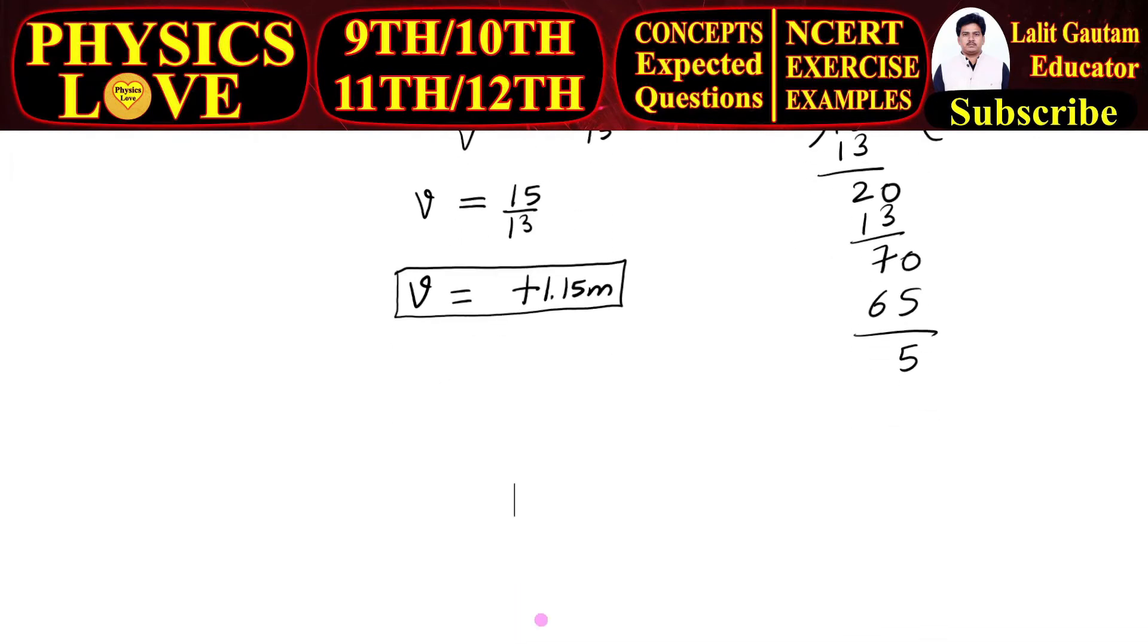So how can we find out the value of height of image? We know the formula of linear magnification, that is height of image by height of object equal to minus v by u. Now h dash divided by h is equal to minus v, what is v? V is 1.15. And what is u? U is minus 5. Now negative negative cancel out.